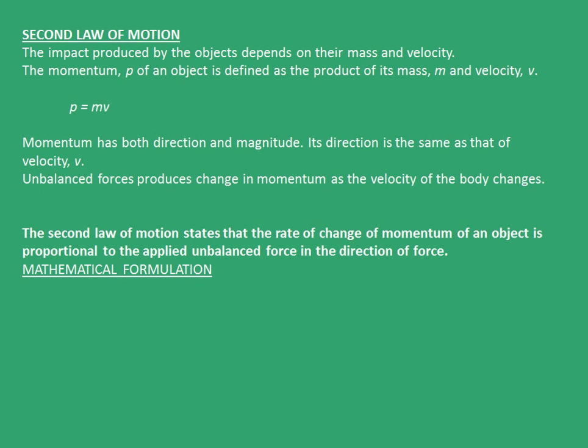Having understood what the first law says, let's move on to the second law of motion. The impact produced by the objects depends on their mass and velocity. The momentum, p, of an object is defined as the product of its mass, m, and velocity, v. So, p is mv.